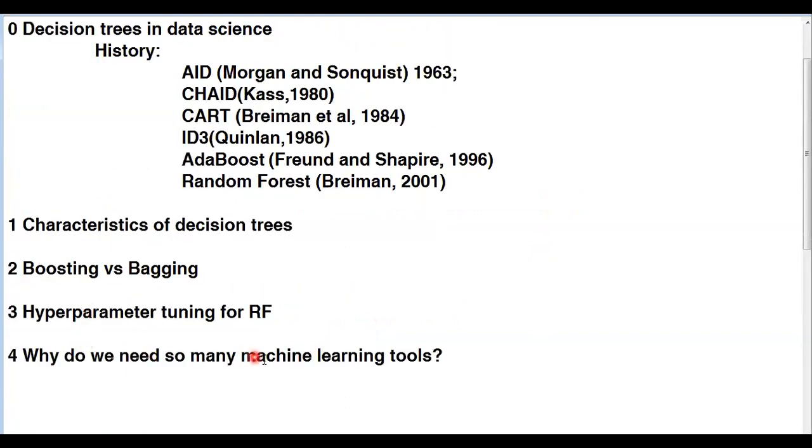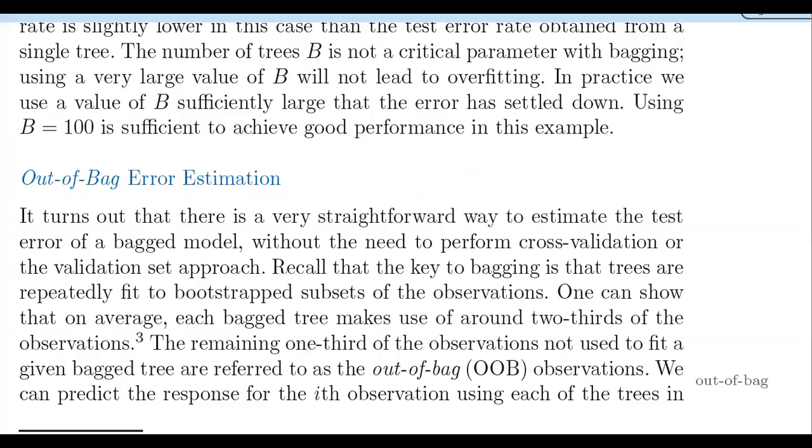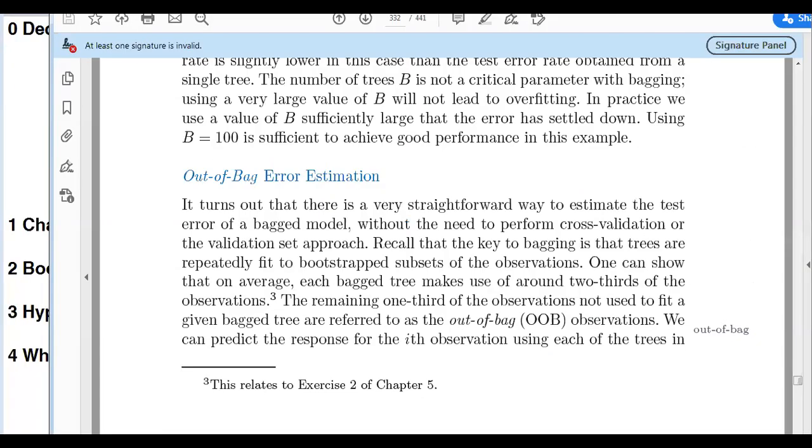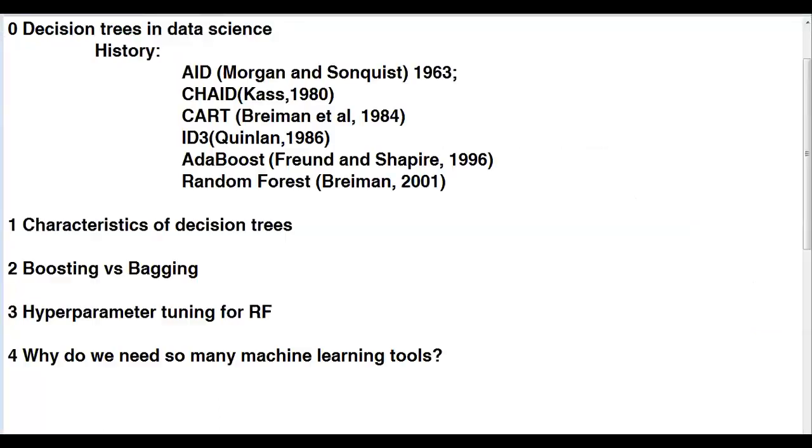Why do we need so many machine learning tools? I picked up on this because last week there was a discussion about the EEG data. Someone said that the SVM was better. This is a good discussion about why some methods are better than others. For this I want to look at the example from your text, the ISLR text.